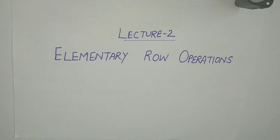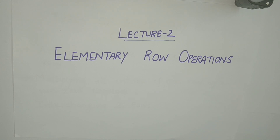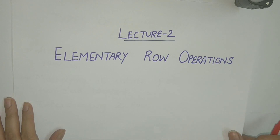Hello friends. In the previous video we discussed about matrix form of a system of linear equations and the corresponding augmented form. Now, we shall see how the augmented matrix can be used to derive the solution. In this lecture, we will discuss about elementary row operations, echelon form and reduced row echelon form of a matrix.